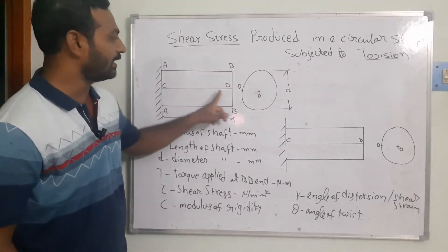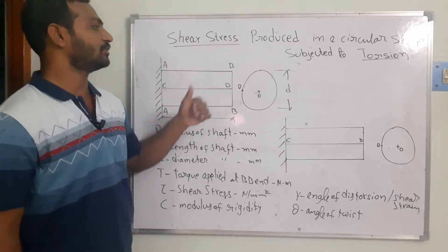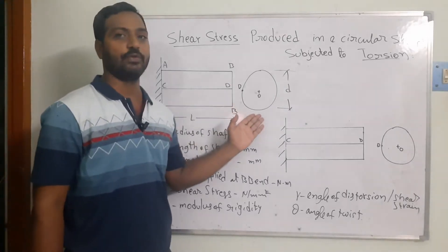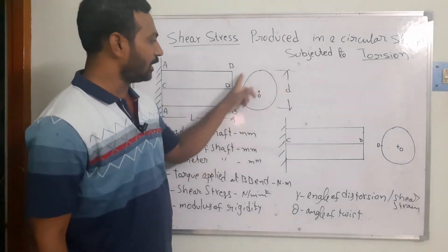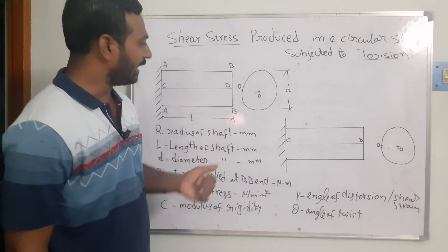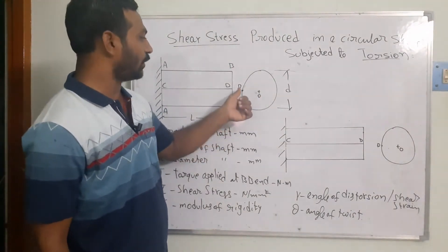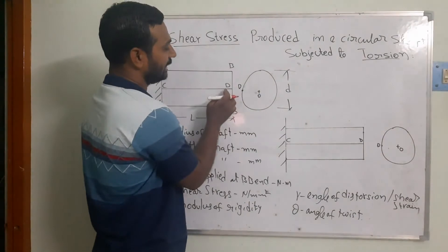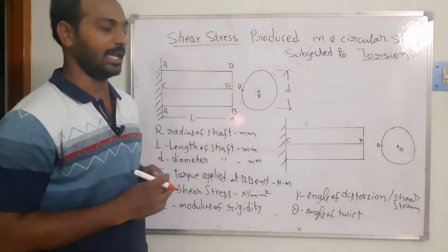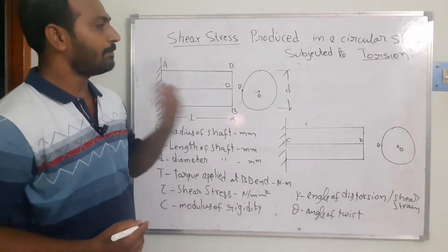I have drawn a line CD on the outer surface of the shaft. In the end view, we can see the shaft has a circular cross-section. O is the center, and when viewed from the end, point B is visible while C is hidden behind D. The diameter taken here is D.